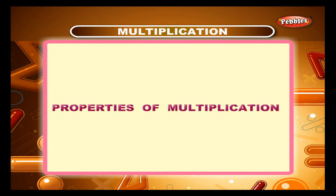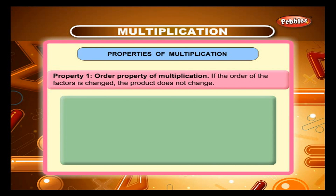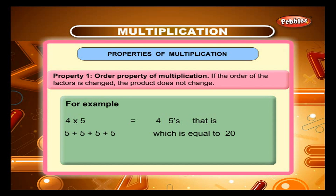Properties of multiplication. Property 1: Order property of multiplication. If the order of the factors is changed, the product does not change. For example, 4 into 5 is equal to 4 fives, that is 5 plus 5 plus 5 plus 5, which is equal to 20. And 5 into 4 is equal to 5 fours, that is 4 plus 4 plus 4 plus 4 plus 4, which is also equal to 20.